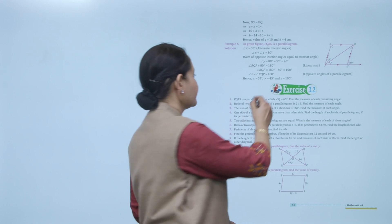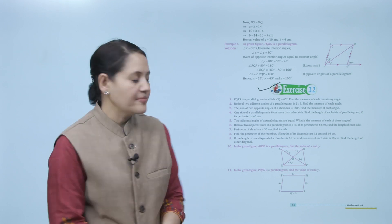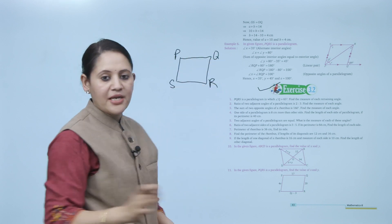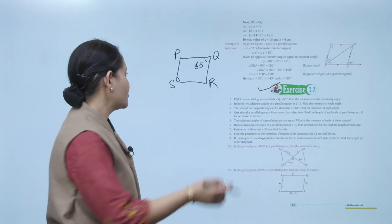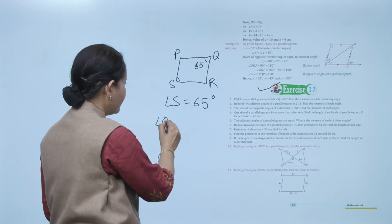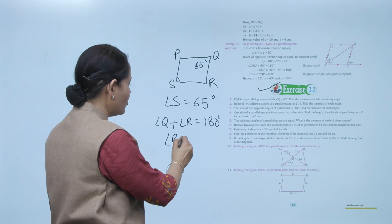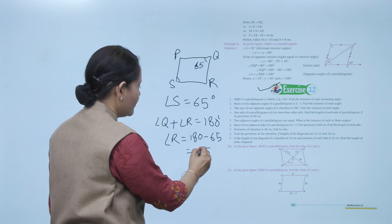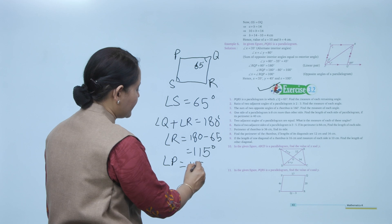Next is Exercise 3.2. PQRS is a parallelogram in which angle Q is 65 degrees. Find the measure of the remaining angles. In a parallelogram, opposite angles are equal, so angle S equals 65 degrees. Angle Q plus angle R equals 180 degrees, so angle R equals 180 − 65 = 115 degrees. Therefore angle P equals 115 degrees.